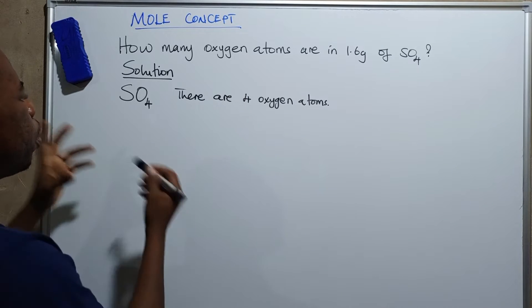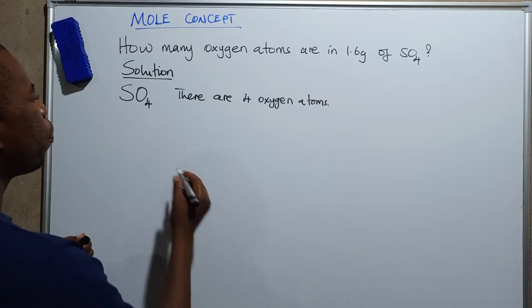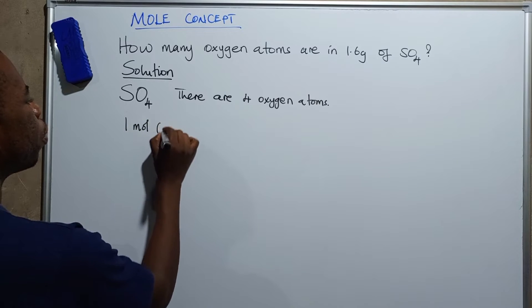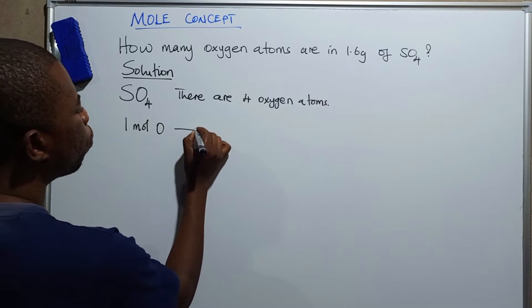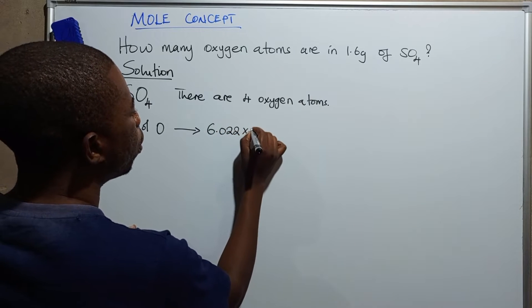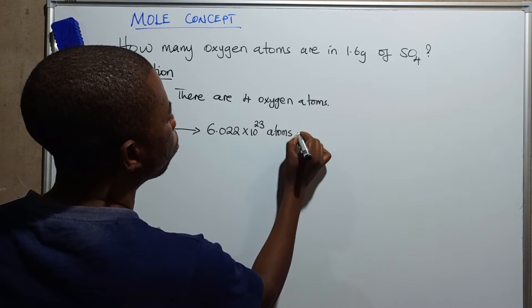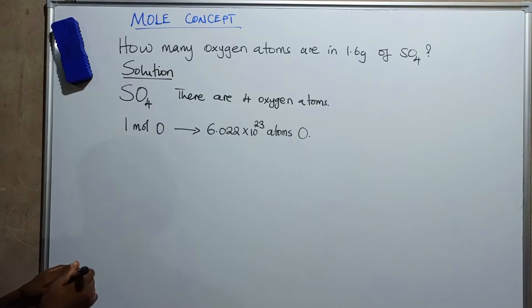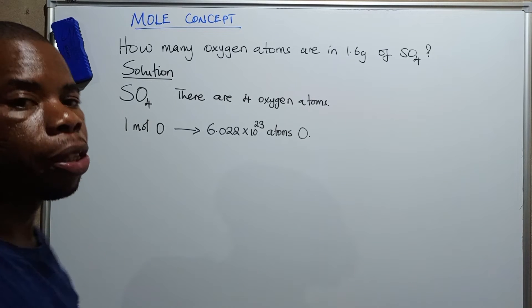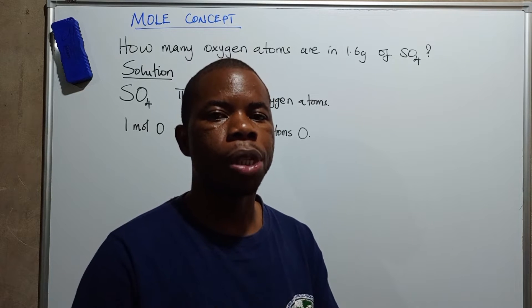Such a tricky question is answered using what we call the mole-to-mole relationship. Remember, according to Avogadro, if you have one mole of a substance — let's say one mole of oxygen atoms — that one mole of oxygen atoms will contain 6.022 times 10 to the power 23 atoms of oxygen.